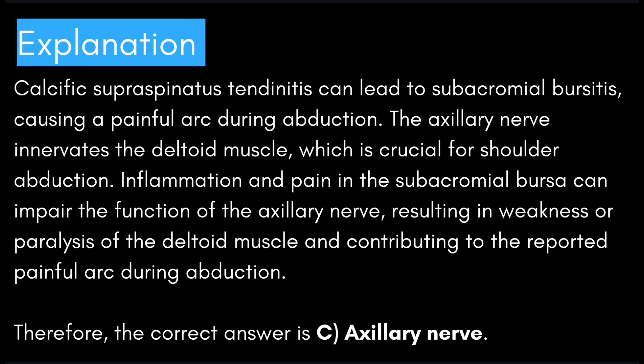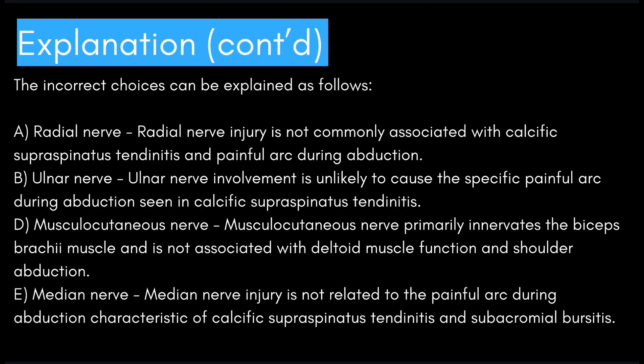Let's see why the other choices are incorrect. Radial nerve injury is not commonly associated with calcific supraspinatus tendonitis and painful arc during abduction. Ulnar nerve involvement is unlikely to cause a specific painful arc during abduction seen in calcific supraspinatus tendonitis. Musculocutaneous nerve primarily innervates the biceps brachii and is not associated with deltoid muscle function or shoulder abduction. Median nerve injury is not related to the painful arc during abduction characteristic of calcific supraspinatus tendonitis and subacromial bursitis.